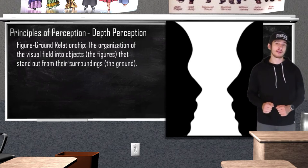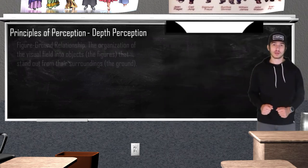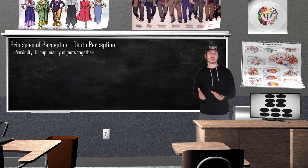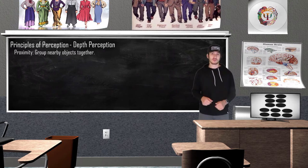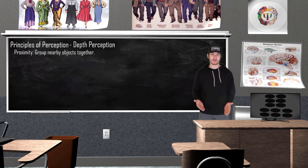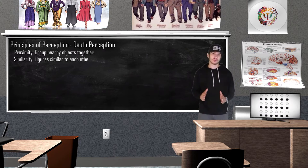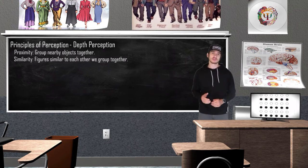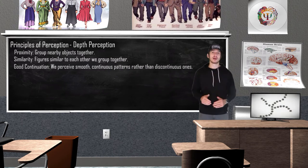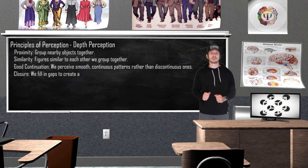Once we perceive our figure from our background, we organize this information in meaningful ways. This can be done through proximity — grouping nearby figures together. Similarity is when figures are similar to one another, we usually group them together; in one image we see black and white horizontal lines instead of vertical lines. Good continuation is when we perceive smooth, continuous patterns rather than discontinuous ones. Closure is when we fill in the gaps to create a complete whole object — our brain fills in the gaps to allow us to see a cube.